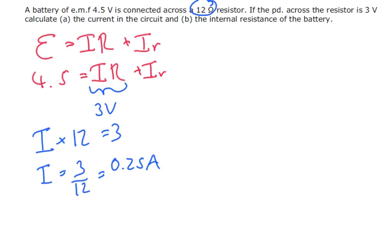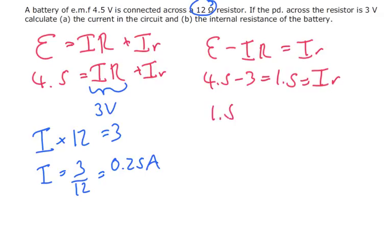Now lastly we need to find out the internal resistance. So we're going to find what's the internal voltage being taken up. So the voltage across the internal resistor is 1.5 volts. So 1.5 divided by the current, which is 0.25, is going to equal R. So that's the same as doing 1.5 times 4, which gives us 6 ohms.